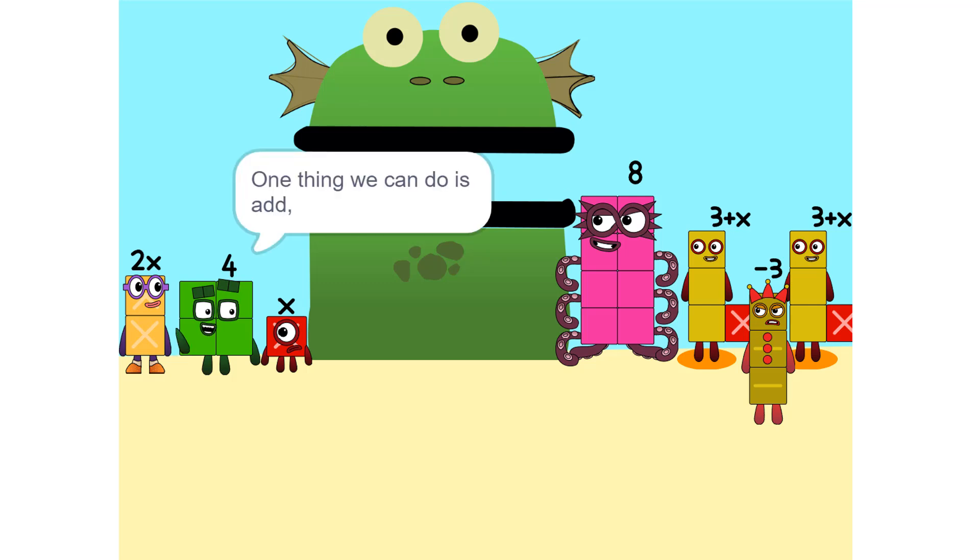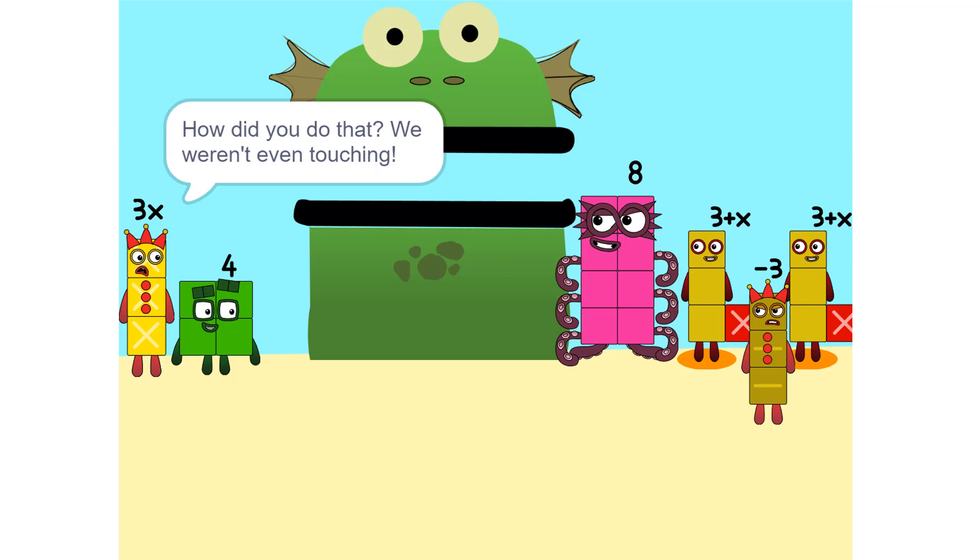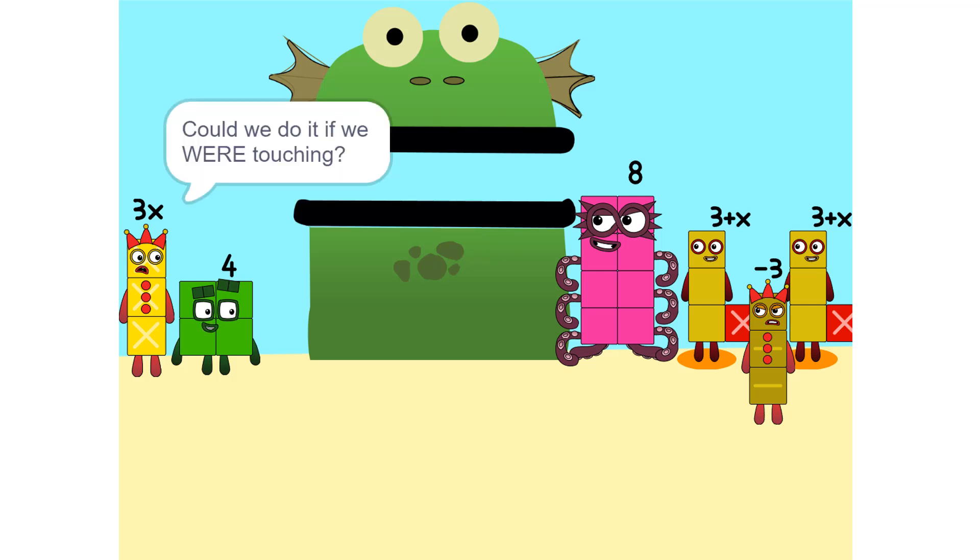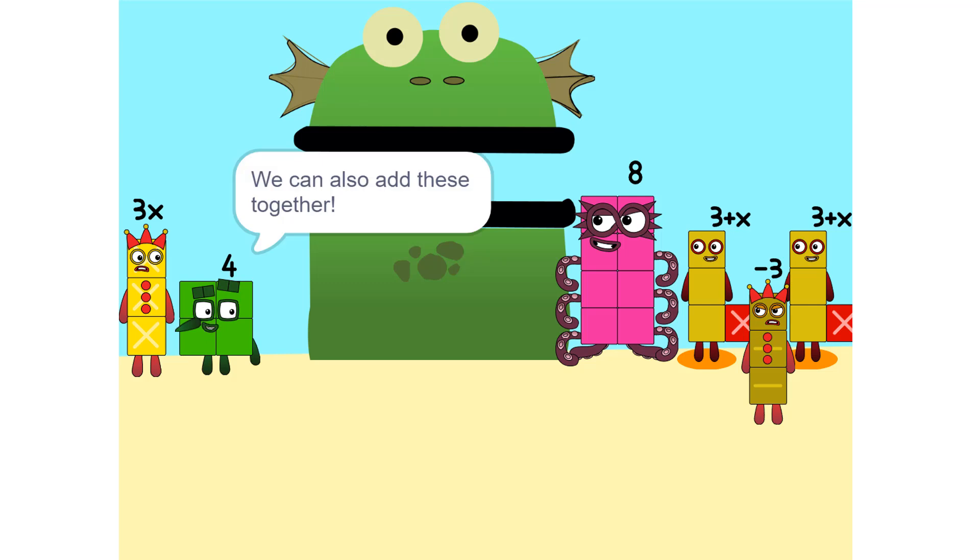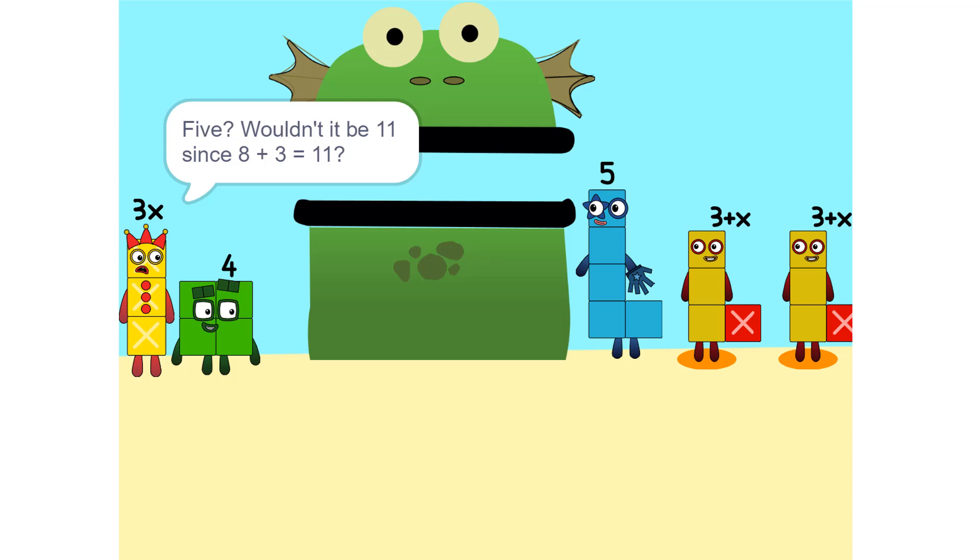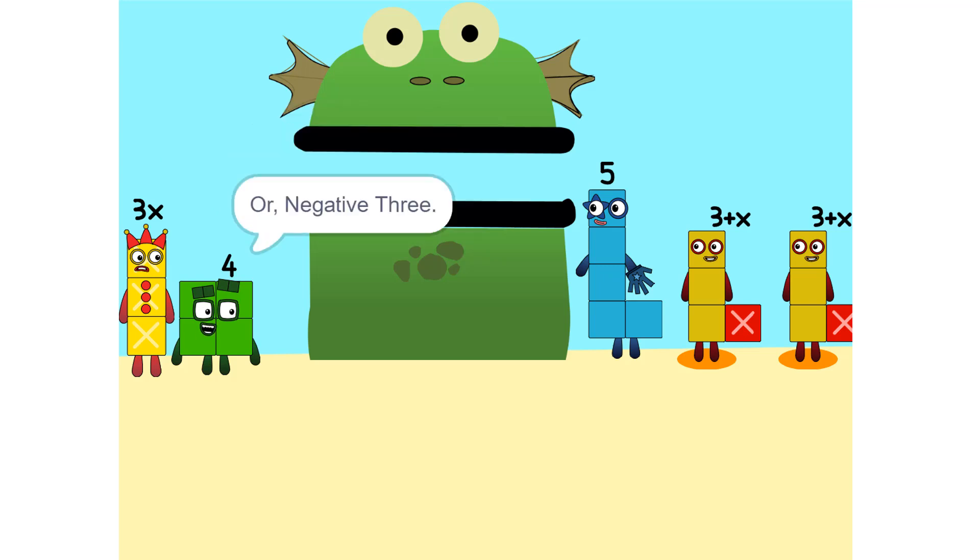One thing we can do is add these two together. How did you do that? We weren't even touching. They don't have to be. Wouldn't it be 11 since 8 plus 3 is 11? No, because we're adding together 8 and minus 3, or negative 3, so it's 5.